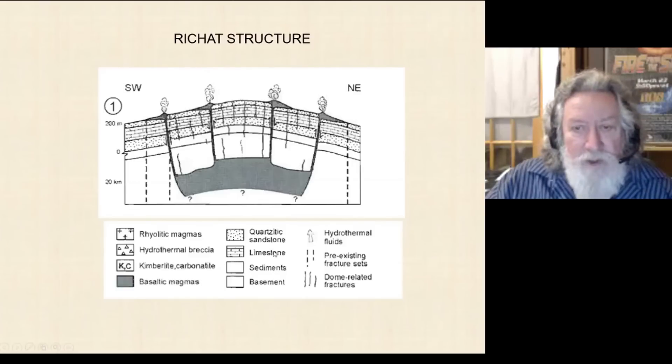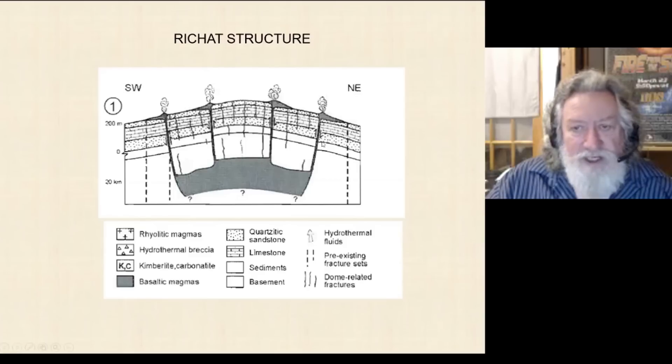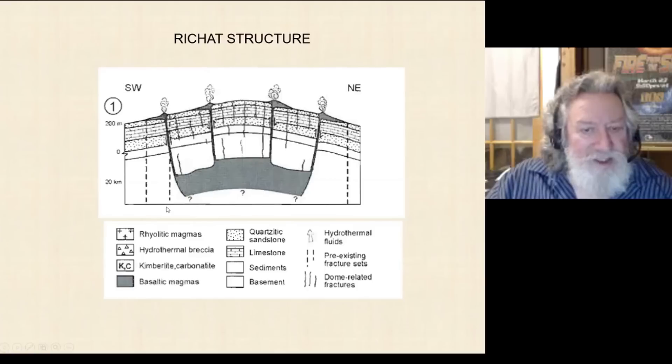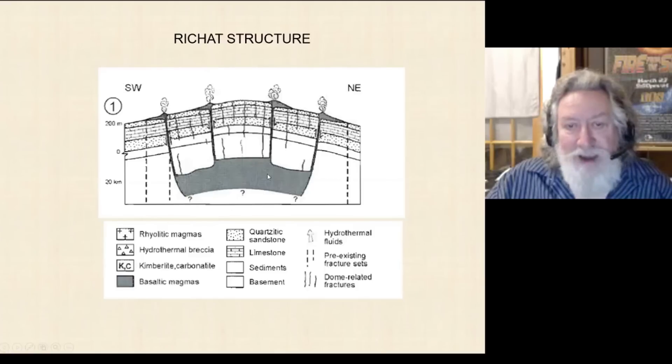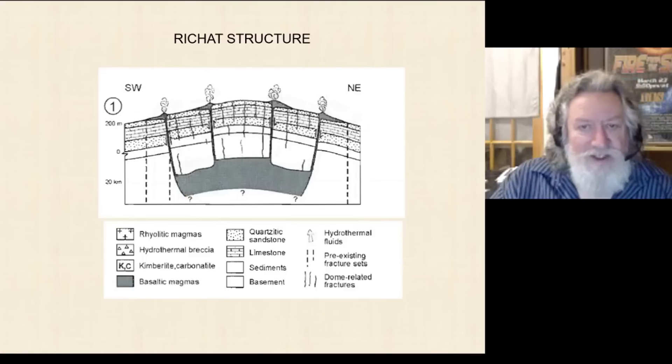It's talking about, here you can see these little cross sections represent each one of these plumes then becomes a volcano, right? And so you've got, these are basaltic magmas down below. We'll go to the next one.